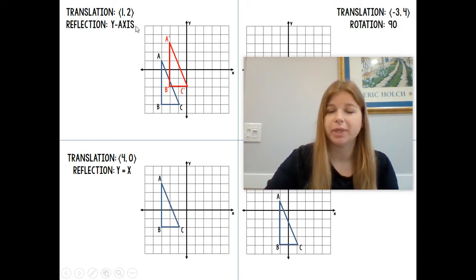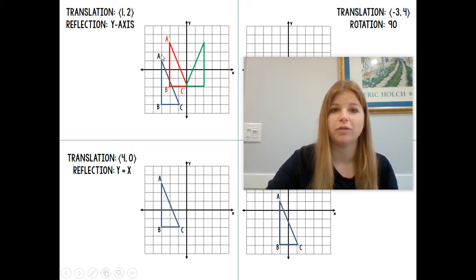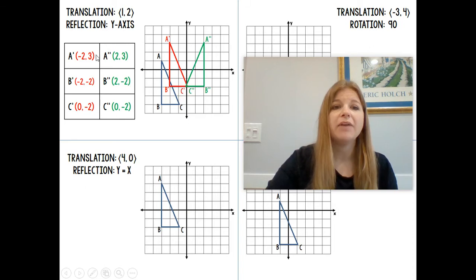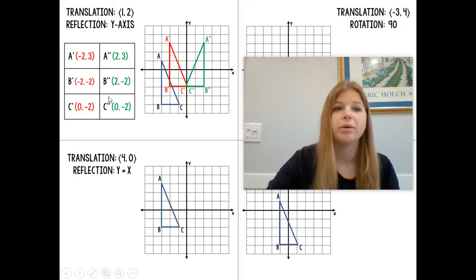The second transformation is a reflection over the y-axis. A reflection over the y-axis means the y-coordinate stays the same while the x-value changes its sign — so from negative 2, positive 3, I go to positive 2, positive 3. Looking at the table of values: from the original figure at negative 3, 1, I add 1 and add 2 to get A prime, B prime, C prime. Then reflecting over the y-axis, the x-values simply become their opposite sign — negative 2 becomes positive 2, 0 stays 0 — while all y-coordinates remain the same.